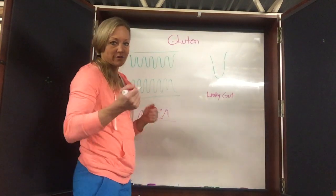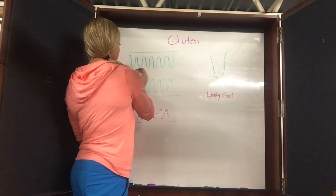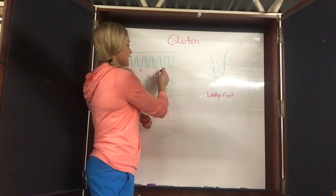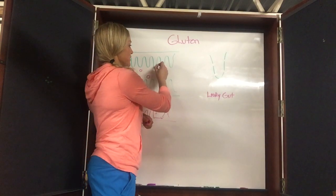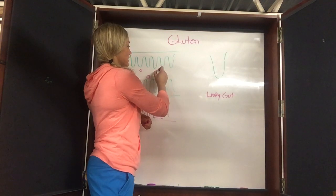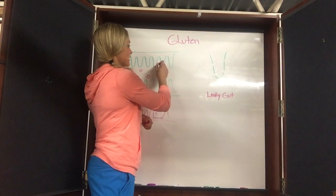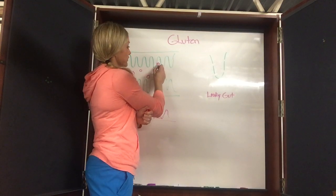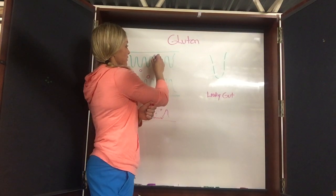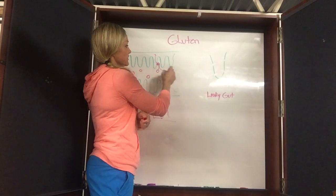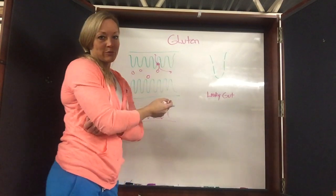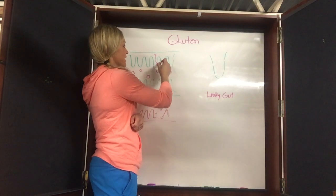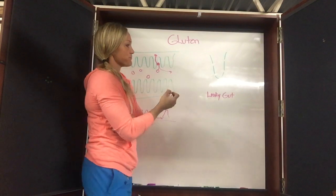A lot of times food particles come in through the stomach, and if the villi come in contact with them, your body is supposed to break apart this protein so your B vitamins go into your bloodstream, but your gluten is not. The problem when people become sensitive is this molecule is not broken down properly and everything goes into the bloodstream.